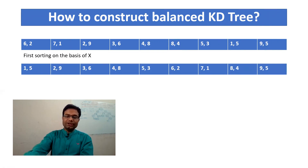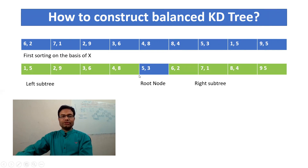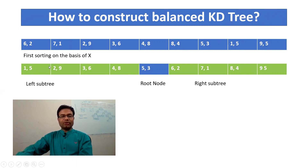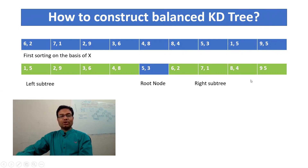Now find the middle element. We have eight or nine elements, so the fifth element is the middle. Once you get the middle element, consider it as the root node — so five-three becomes the root node. The left side forms the left subtree and the right side forms the right subtree.